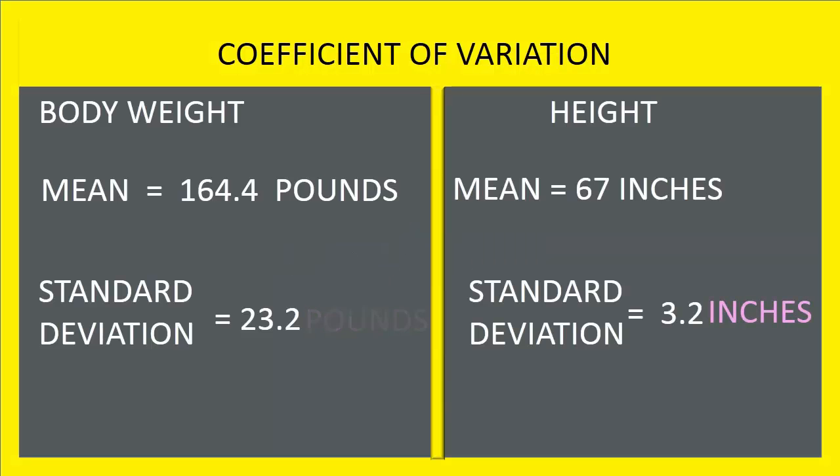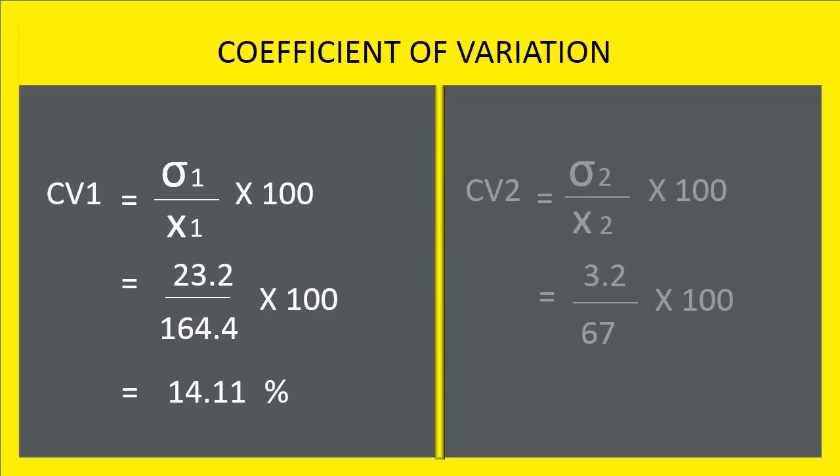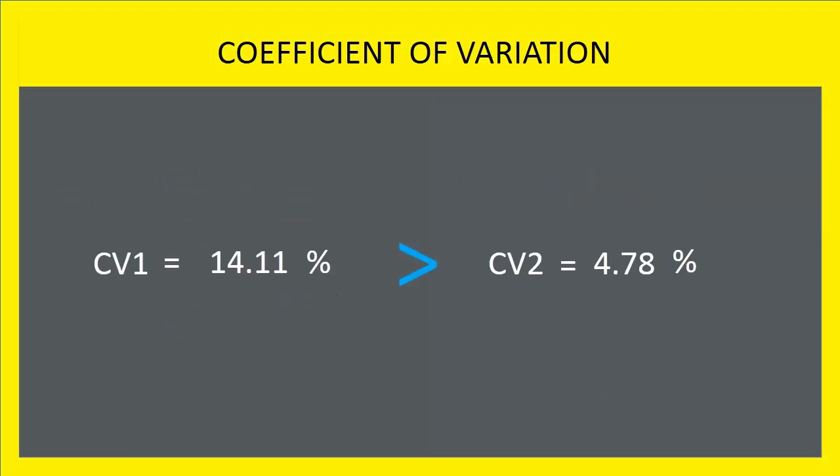Let's look at the same example. Here, the coefficient of variation for the first data set is 14.11%, whereas the coefficient of variation for the second data set is 4.78%. The data with lesser coefficient of variation is more consistent or stable than the other data. Here, the second data set is more stable.